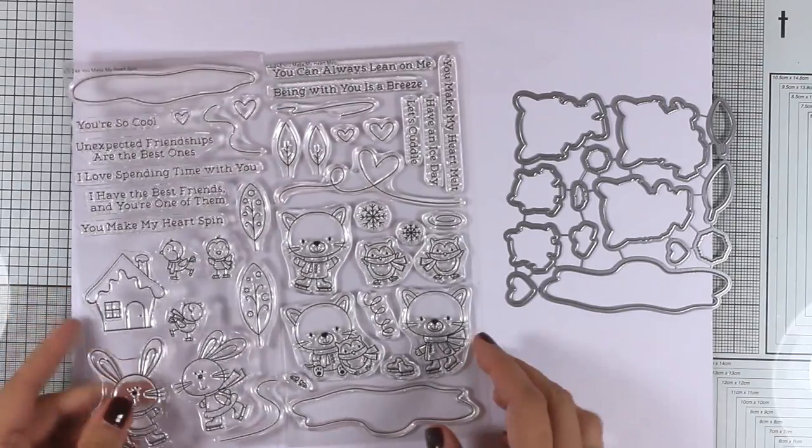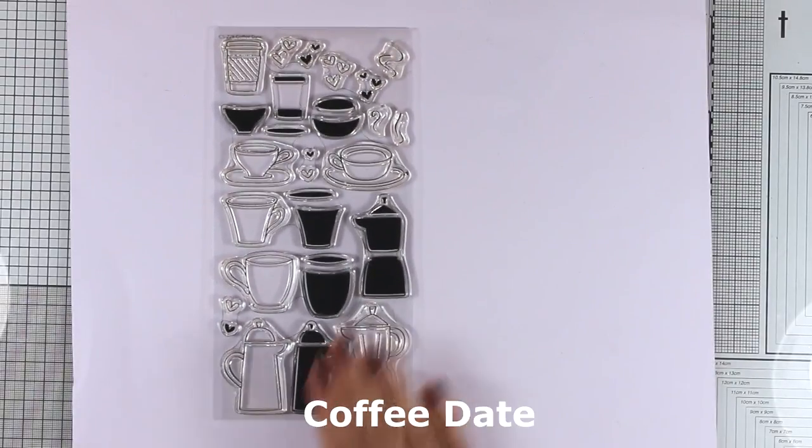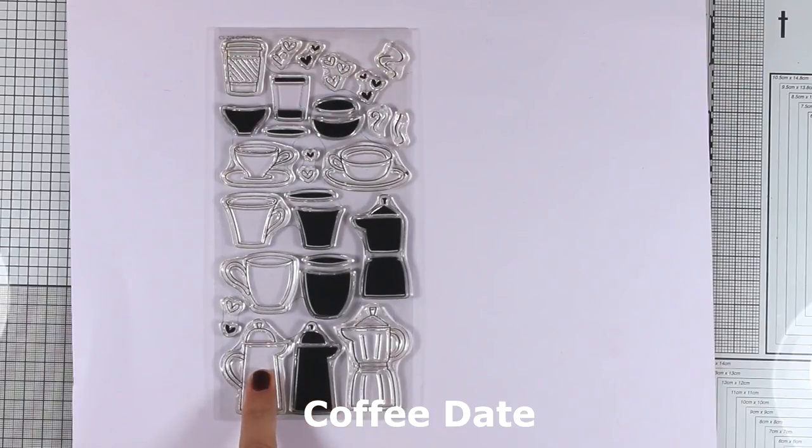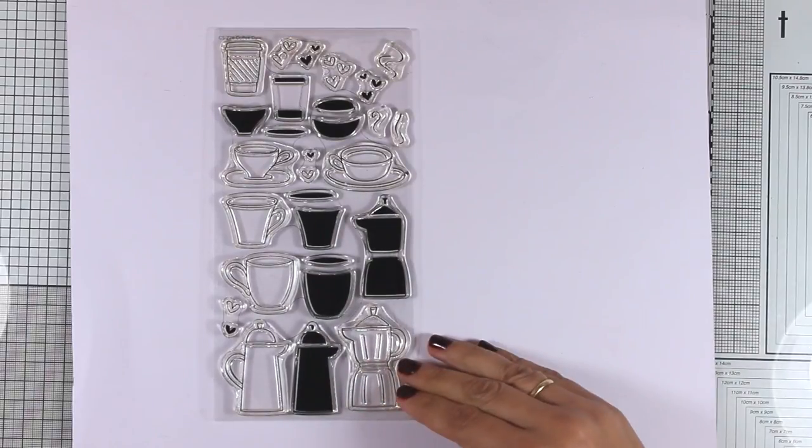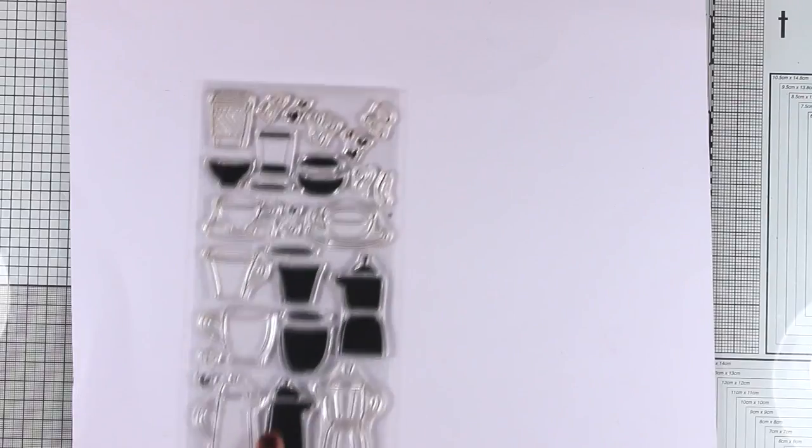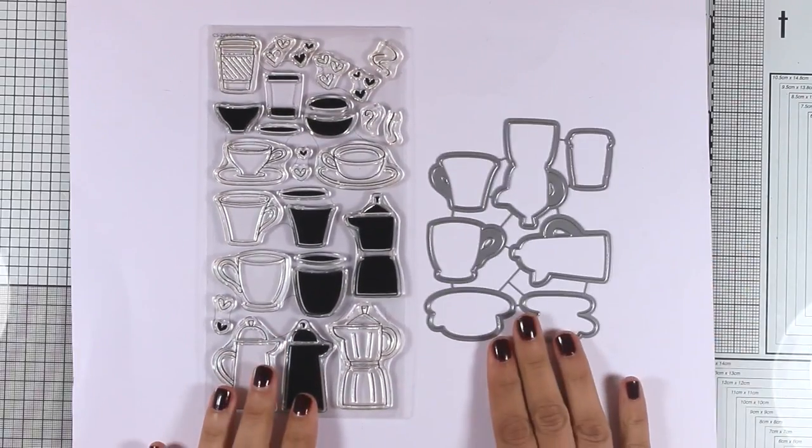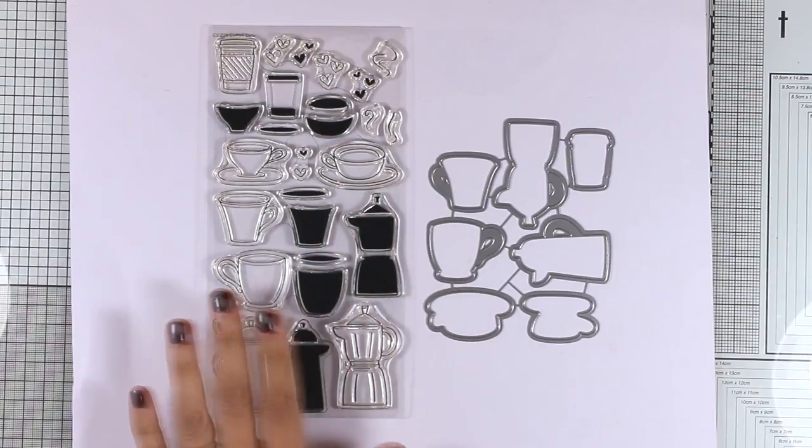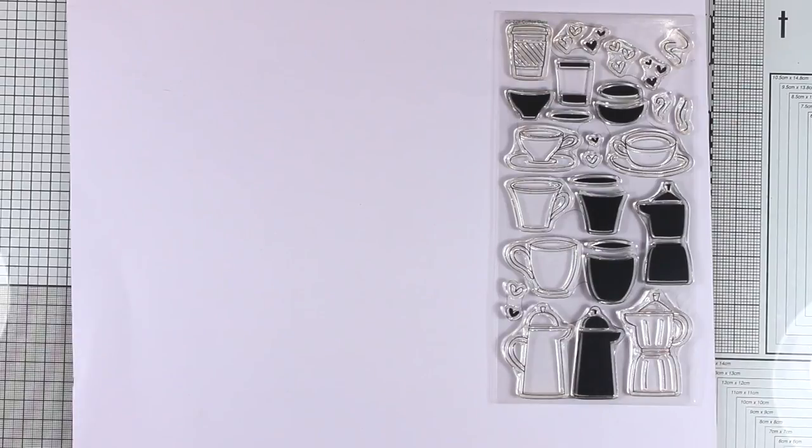Let's move on to another type of stamp set. This is Coffee Date. As you can see, it comes with a solid image as well as an open line one, so you can stamp one inside the other or you can just use the open one and color it with your favorite mediums. I think this design works well for both coffee lovers and tea lovers, so you can really customize it and make it your own. As always, there are matching dies.